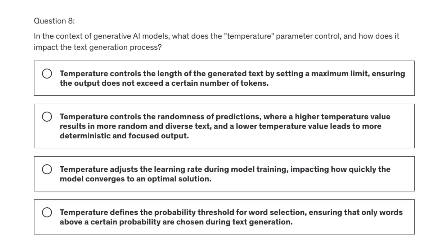Let's look at question eight. In the context of generative AI models, what does the temperature parameter control and how does it impact the text generation process? We have four options. Option A: temperature controls the length of the generated text by setting a maximum limit, ensuring the output does not exceed a certain number of tokens.